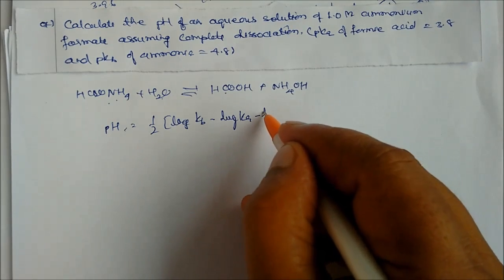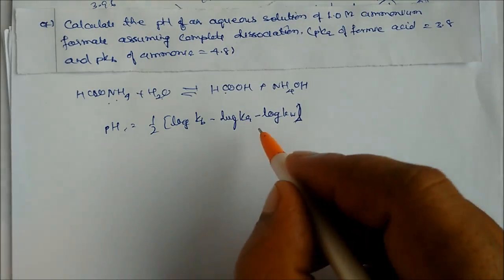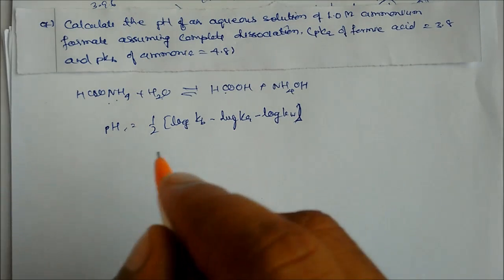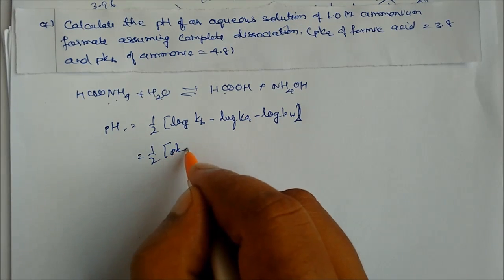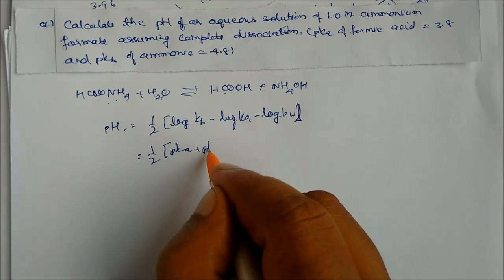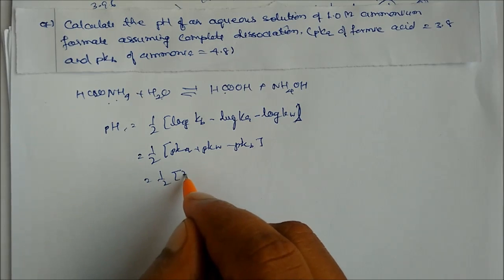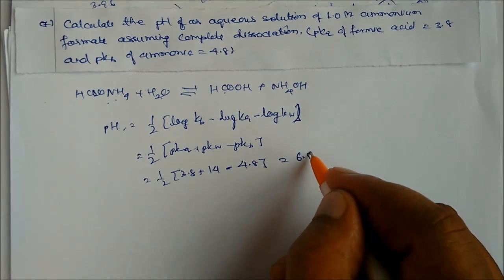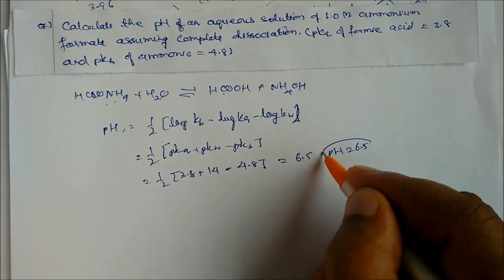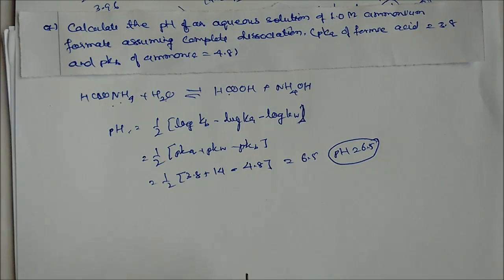For a salt of weak acid and weak base, pH = ½(log Kb − log Ka − log Kw), which simplifies to pH = ½(pKa + pKw − pKb). Substituting: pKa = 3.8, pKw = 14, pKb = 4.8 gives pH = ½(3.8 + 14 − 4.8) = ½(13) = 6.5. Note that this result is independent of concentration.